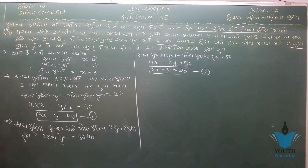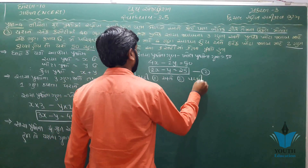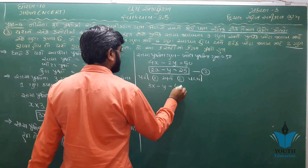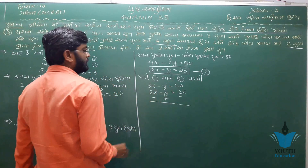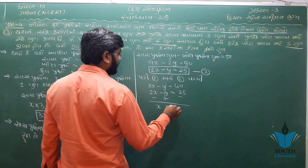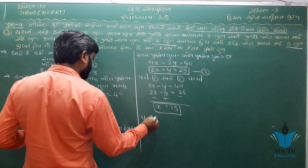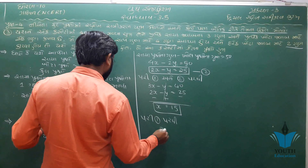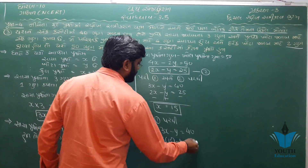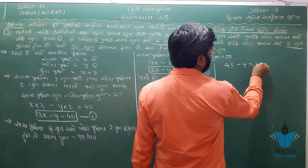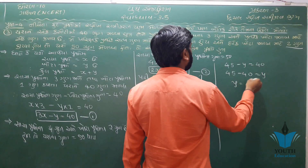ઉકેલ સોધી શકીએ. પરિણામ: 3x - y = 40 અને 2x - y = 25. નિશાની બદલીએ — 3x માંથી 2x જાય, x = 15. x = 15 પ્રથમ સમીકરણમાં મૂકો: 3(15) - y = 40, 45 - y = 40, y = 5.